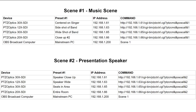The probably only command you need to know is how to recall a preset. The way I'm setting this up: I've got four cameras and two scenes — one is a music scene pretending there's a band, and scene two assumes there's a presentation. I have the IP address of each camera listed, along with the commands. I suggest you make a table like this. The command is: http://{camera IP address}/cgi-bin/ptzctrl.cgi?ptzcmd&poscall&1 — where 'poscall' means position call and the number is the preset. For scene two, you'd use preset 2.